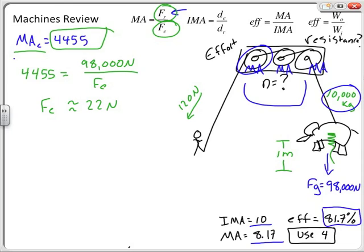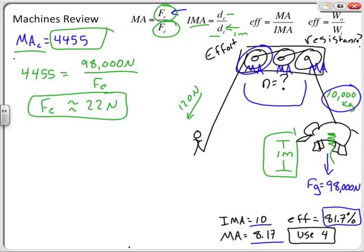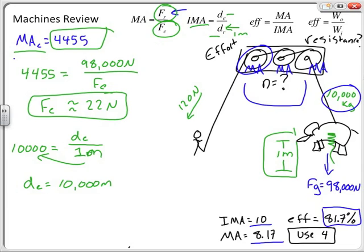How much rope do we need to pull in to raise the elephant 1 meter? IMA deals with displacements: 10,000 = effort displacement / 1 meter, so effort displacement = 10,000 meters — that's 10 kilometers of rope. Probably not a task worth attempting! Hopefully the math makes sense and you understand a little about how to use machines. As always, if it makes sense, let your computer know.